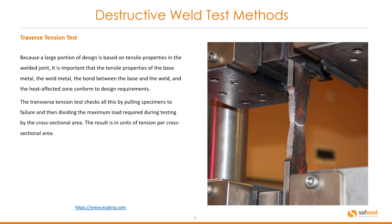Because a large portion of design is based on tensile properties in the welded joint, it is important that the tensile properties of the base material, the weld metal, the bond between the base and the weld, and the heat-affected zone all conform to design requirements. The transverse tension test checks all of these by pulling specimens to failure and dividing the maximum load by the cross-sectional area. The result is in units of tension per cross-sectional area, which needs to be checked against the specifications.